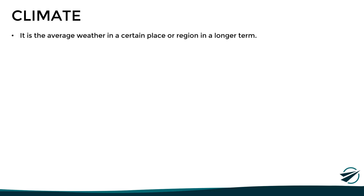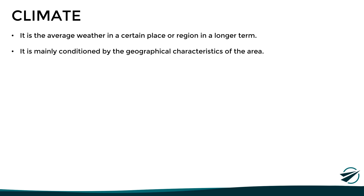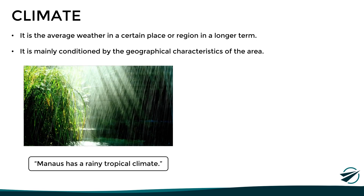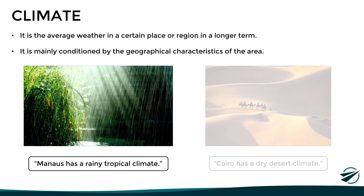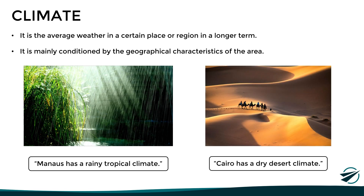The other important term is climate, which is defined as the average weather in a certain place or region over the longer term. Climate is mainly conditioned by geographical characteristics of the area, such as the latitude, type of surface, and elevation above sea level, among other factors. For example, the city of Manaus in Brazil has a rainy tropical climate, while the city of Cairo in Egypt has a dry desert climate. This does not mean every day will be like that — it only implies those are the most common conditions in that region.